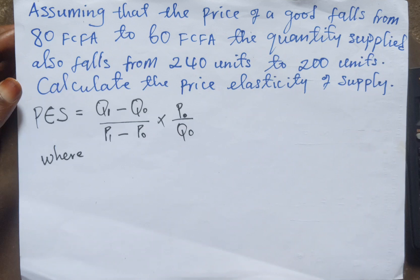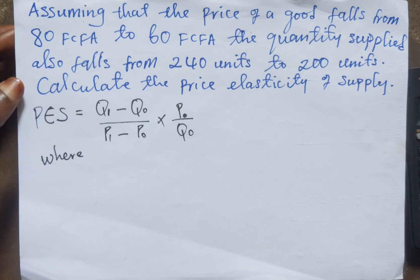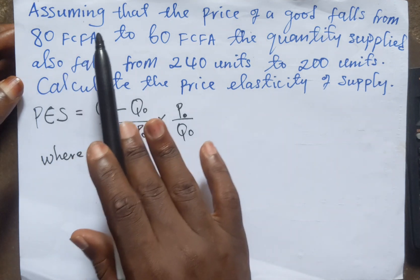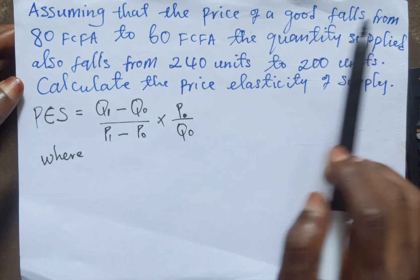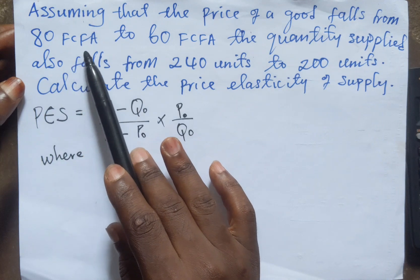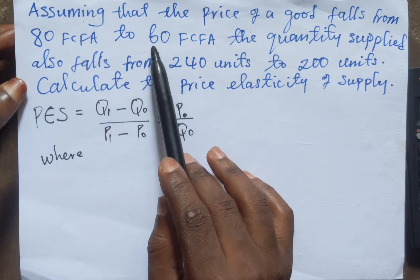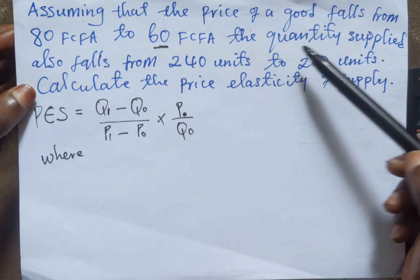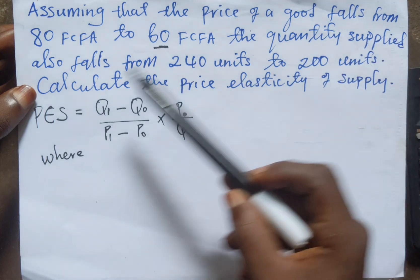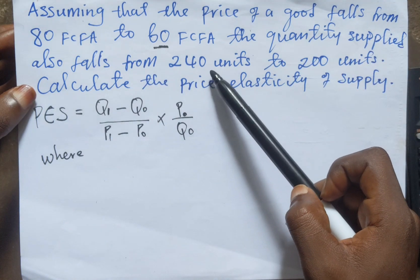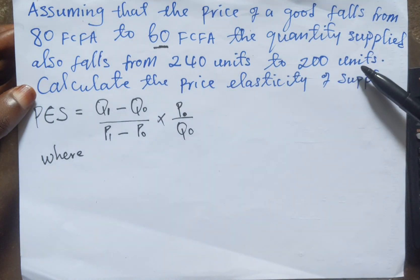Welcome to another session of Sam's Economics tutorials. In today's video, I'm going to be showing you how to calculate price elasticity of supply. We have taken this example assuming that the price falls from 80 to 60, and the quantity supplied also falls from 240 units to 200 units.